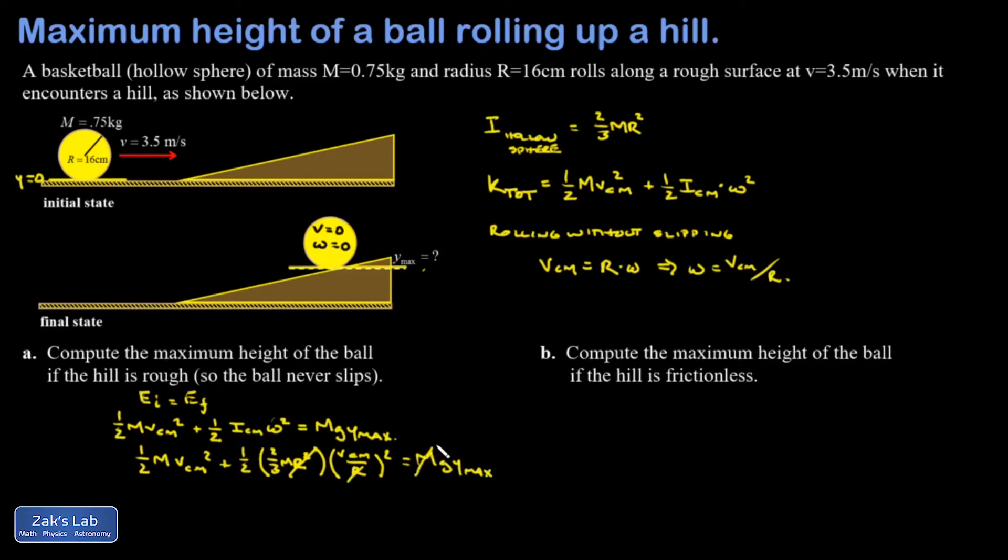This equals mg y max, and it turns out the m's cancel as well. So if you look up in the original problem, this information was unnecessary: mass and radius for the ball. Cleaning things up a little bit on the left hand side, I just canceled some twos in the second term.